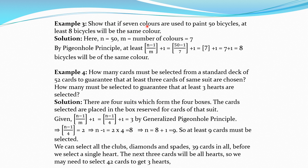Now next: show that if 7 colors are used to paint 50 bicycles, at least 8 bicycles will be of the same color. Here 50 bicycles are there and 7 colors are used. We form boxes according to the 7 colors, so each different color is one different box — there will be 7 boxes. According to color, 50 bicycles are placed into those 7 boxes. So the number of objects n equals 50, and m equals the number of colors, which is 7.